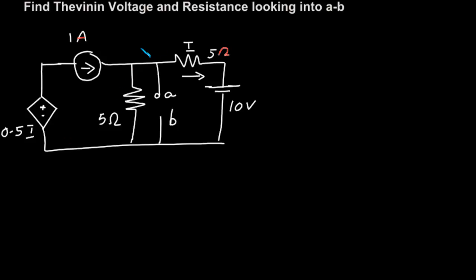So first we will look at the problem and find what kind of sources we have. We have a dependent source here. So first we will find out what is the Thevenin's voltage. Then we will see how we can find out the Thevenin's resistance in cases where we have this kind of dependent sources.